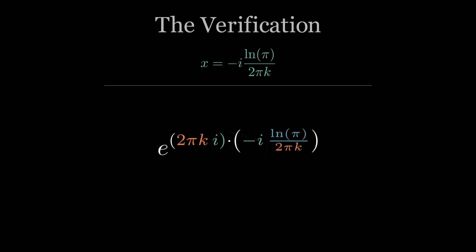Now we verify it. We claimed x equals negative i times ln of π over 2πk. Start with 1 to the x. Rewrite 1 as e to the 2πki. So 1 to the x becomes e to the 2πki times x. Now substitute x. Inside the exponent, the 2πk cancels, and i times negative i becomes 1. So we're left with e to the natural log of π, and e to the natural log of π is just π. That's the verification.